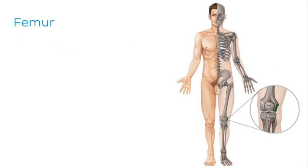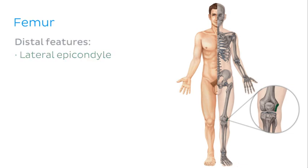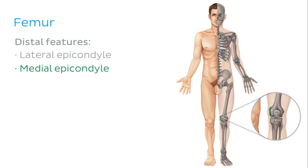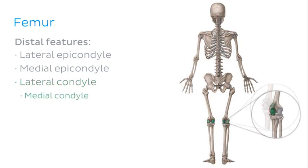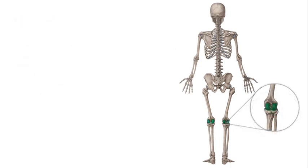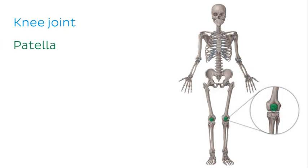Looking at some features of the distal femur: first we have the lateral epicondyle followed by the medial epicondyle, which function as sites of muscle, ligament and tissue attachment. Below these epicondyles we have the lateral condyle and the medial condyle, which articulate with the tibia of the leg to form the knee joint. On the anterior surface of the knee joint is an irregularly shaped bone called the patella, also known as the kneecap.